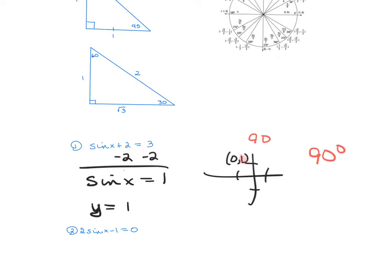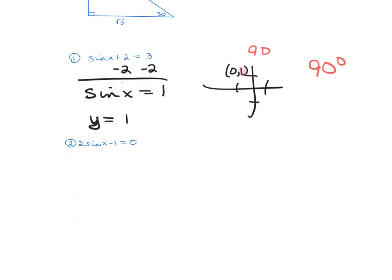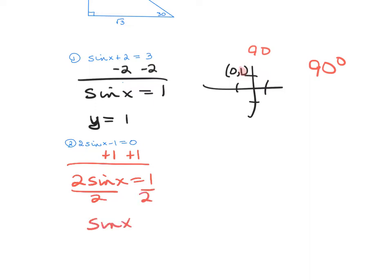The next one — I need to solve for sine of x first. I'm going to add 1 to both sides, so 2 sine of x equals 1, divide by 2. And now sine of x equals 1 half.